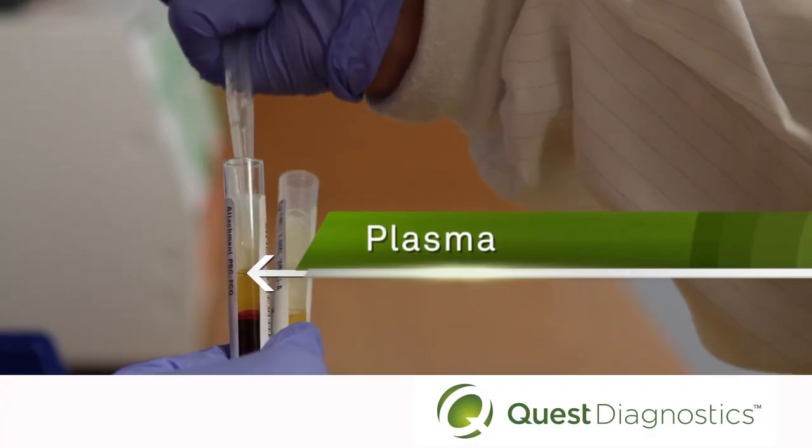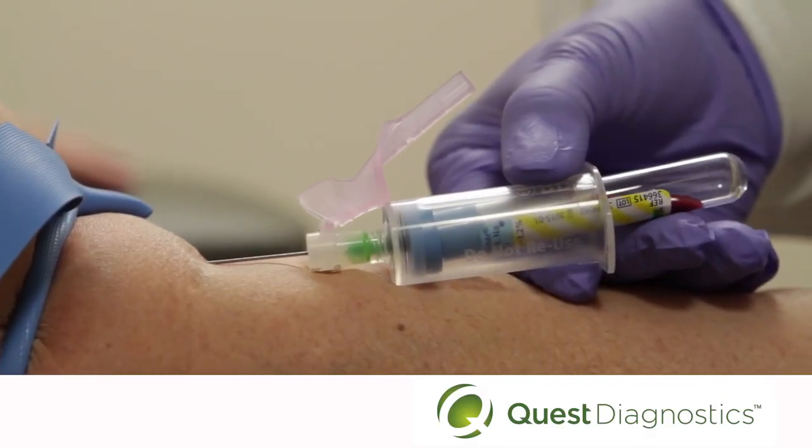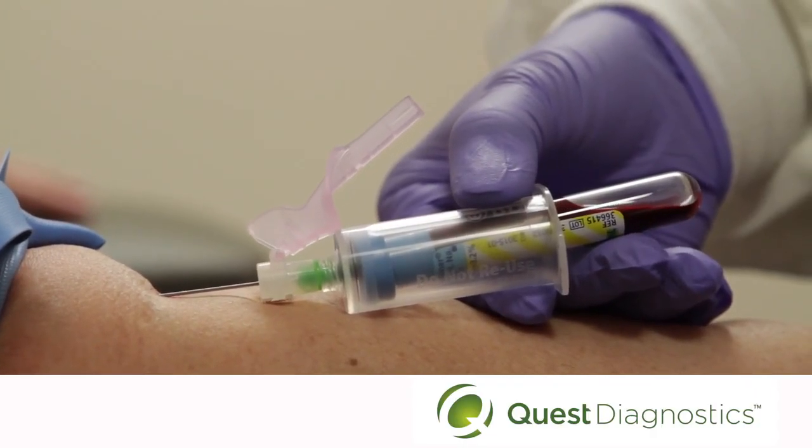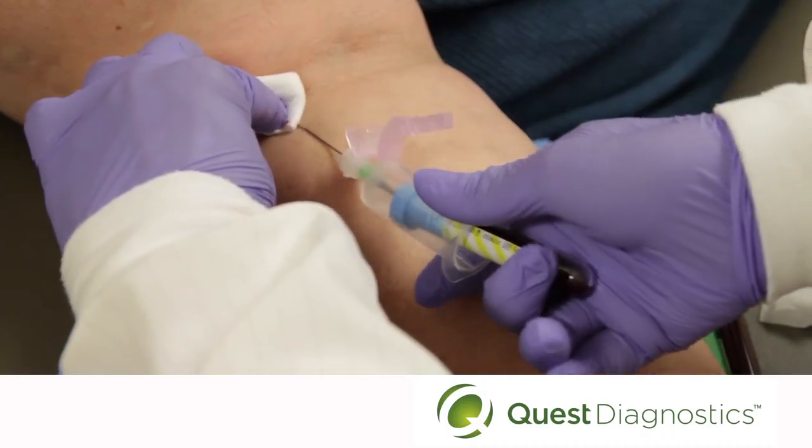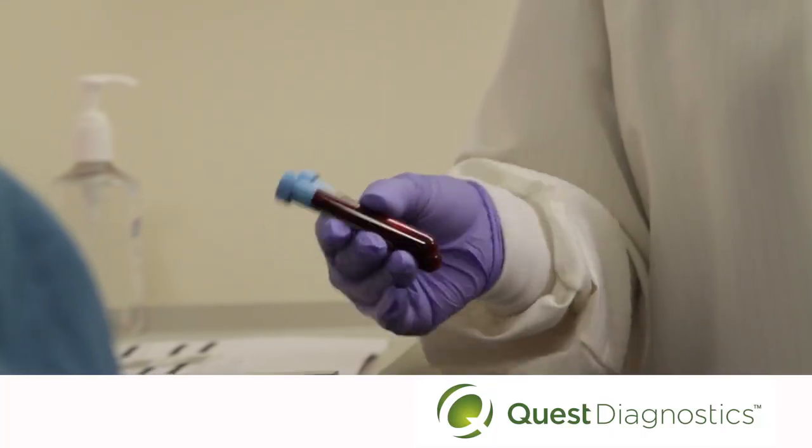Make sure you draw the proper volume of blood. Underfilled tubes will be rejected because the proportion of anticoagulant to plasma will not be correct, and this can lead to misleading test results.